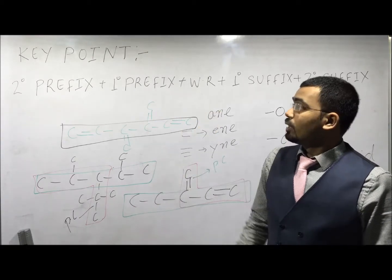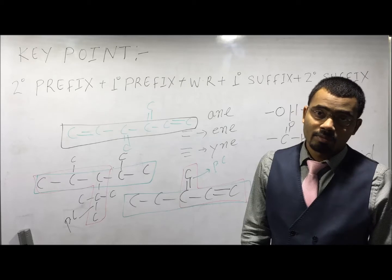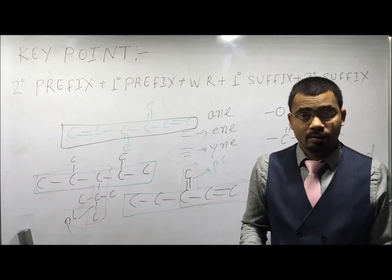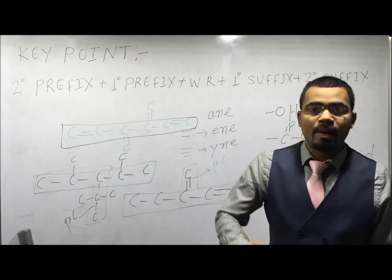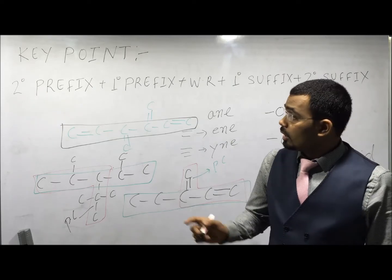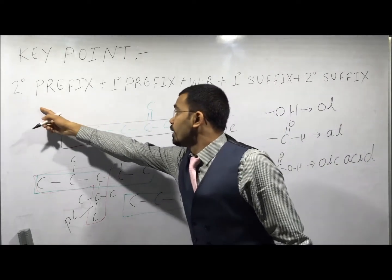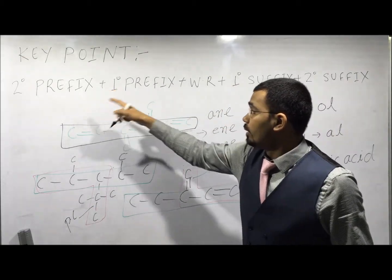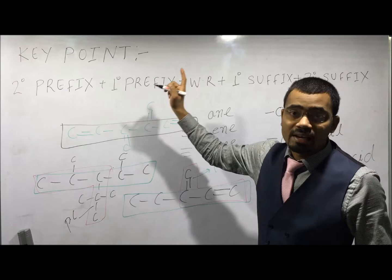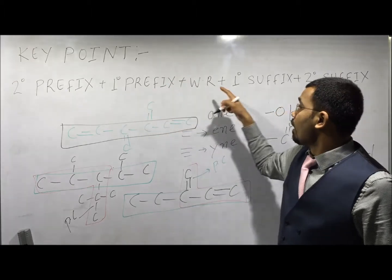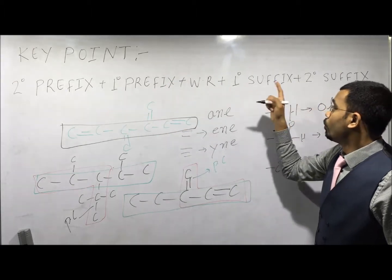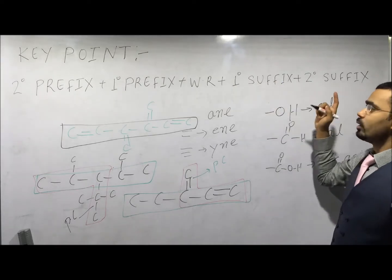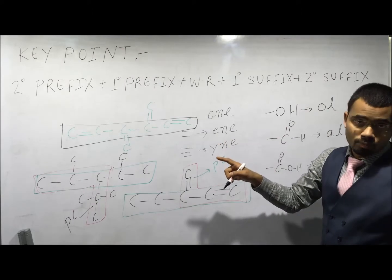So before writing the name, you have to identify the parent chain, then number the parent chain, then write the name according to the given sequence: first write the name of the substituents, then state the cyclic or acyclic nature of the chain, then write the word root with the saturation or unsaturation nature of the chain, and finally write the principal functional group.